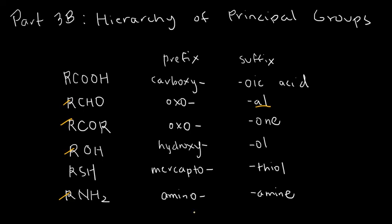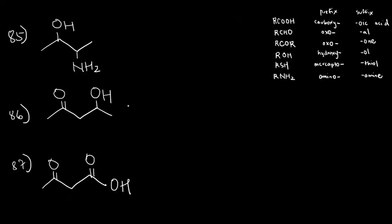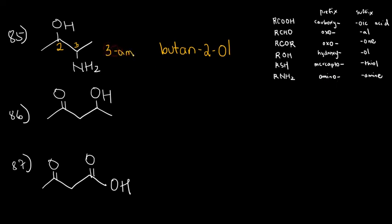Let's look at concrete examples. First, identify the parent — four carbons without any double or triple bond, so that's butane. Then we have a conflict between OH and NH2. In terms of ranking, OH is higher ranking than NH2, so we use the suffix -ol. We number the chain to give OH the lower number, so OH is at carbon 1. This makes NH2 at carbon 3, so we use the prefix amino. The name is 3-aminobutan-1-ol.